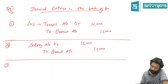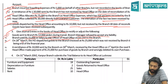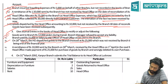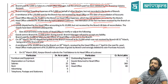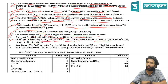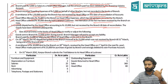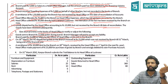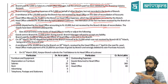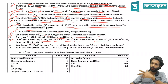Third scenario: on 28th March, HO dispatched goods to branch at invoice price of 25,000 which was not received by branch till 31st March year-end. HO already passed: Branch Account debit to Goods Sent to Branch. No further entry needed in HO books. Branch needs to pass: Goods in Transit Account debit to HO Account 25,000.